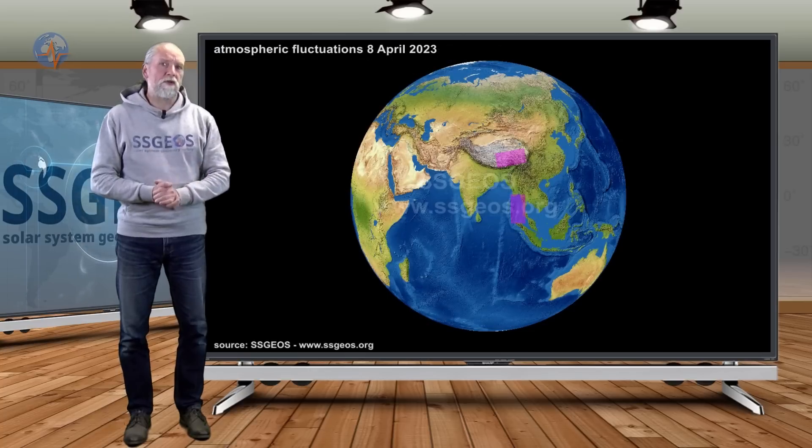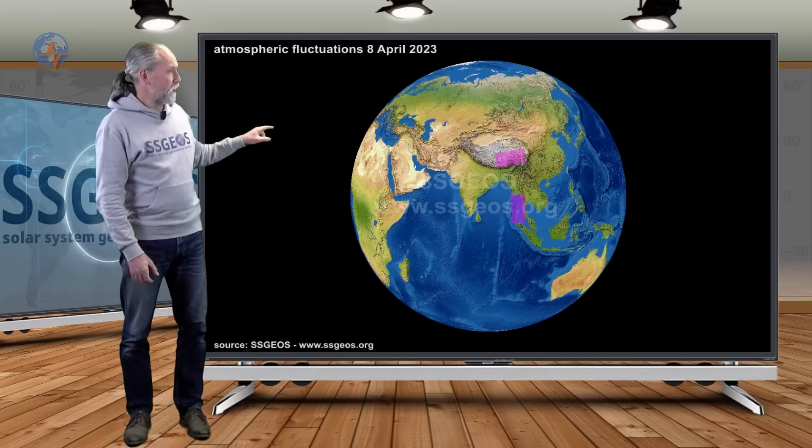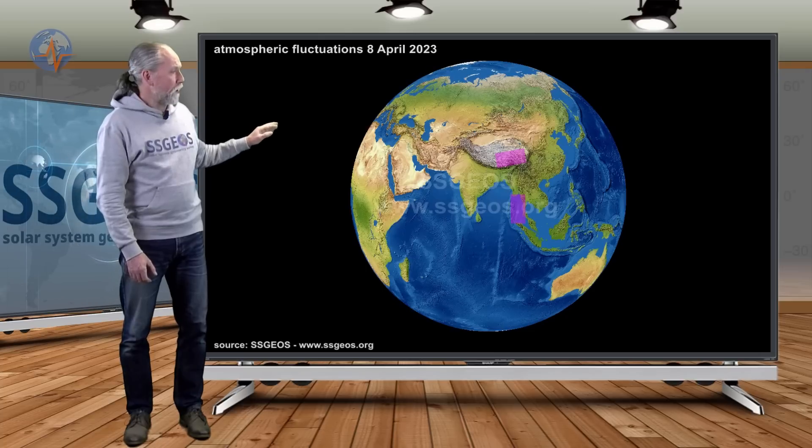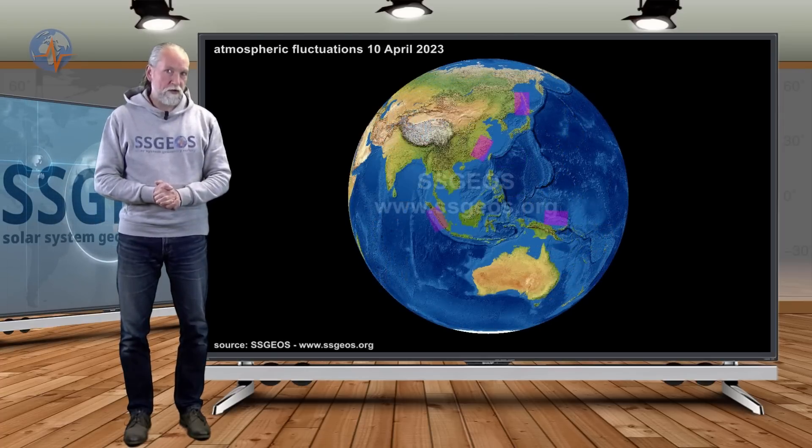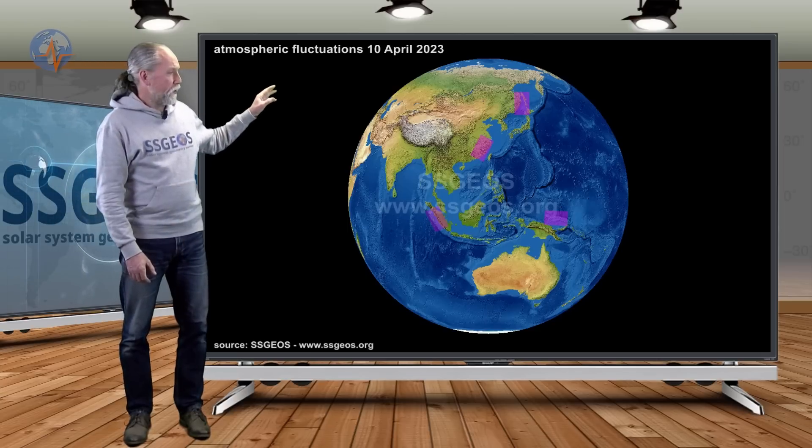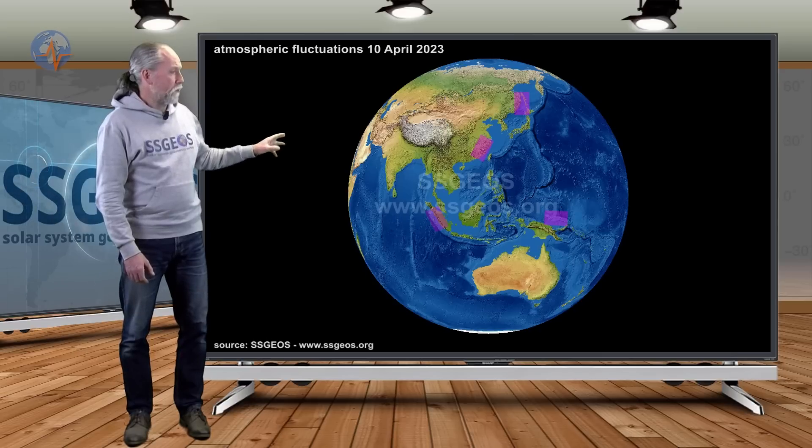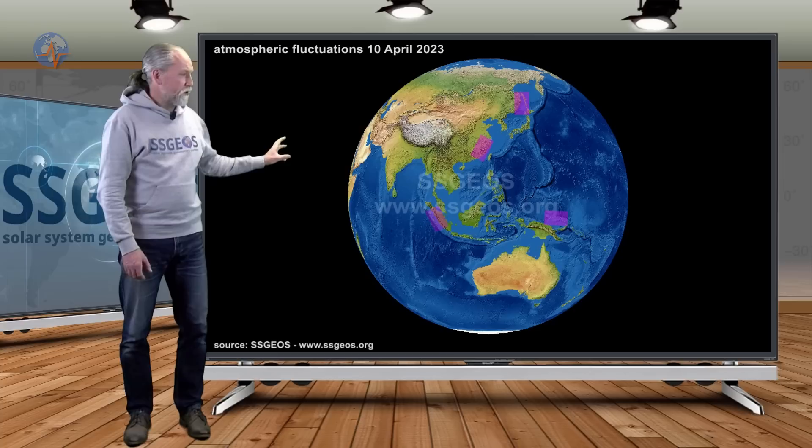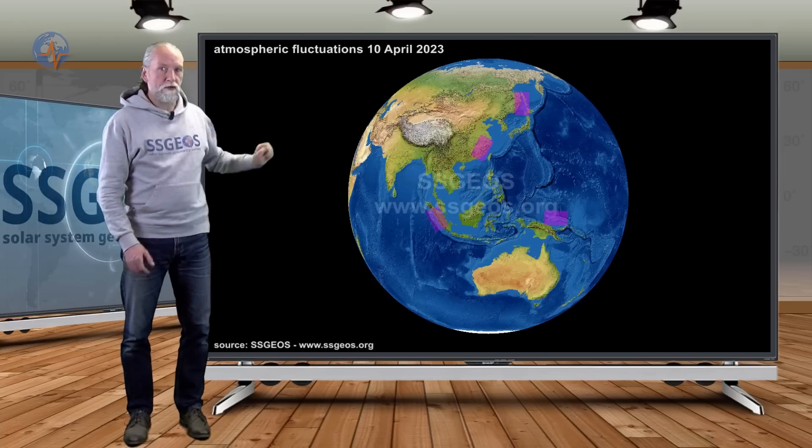If you look at the atmospheric fluctuations that we had in the last couple of days, again I show you the fluctuation on 8th April. That was at the Nicobar Islands and also to the north near the Assam region, Tibet. Then on the 10th, we had some atmospheric fluctuations over the West Pacific, and that was really to the north of Japan and also close to Taiwan and Sumatra, and to the east around the New Britain region.